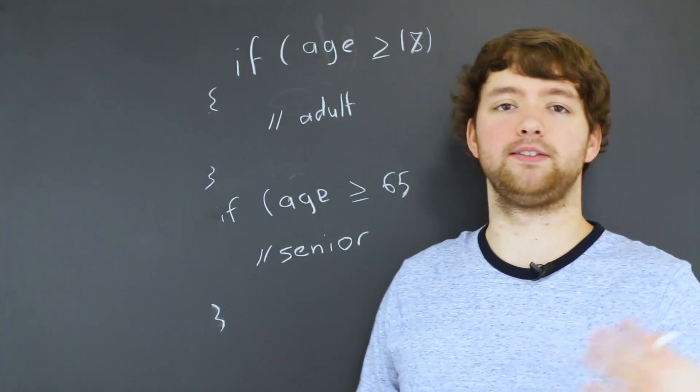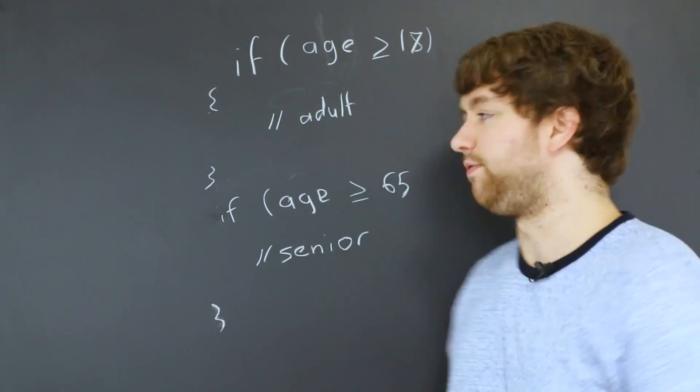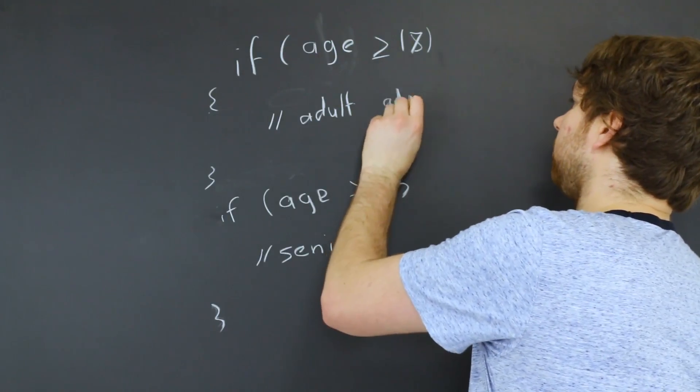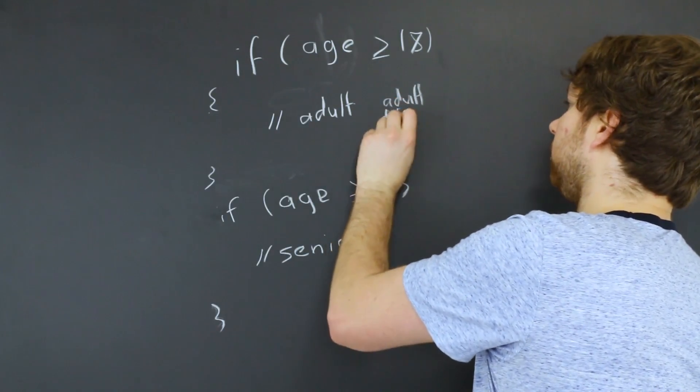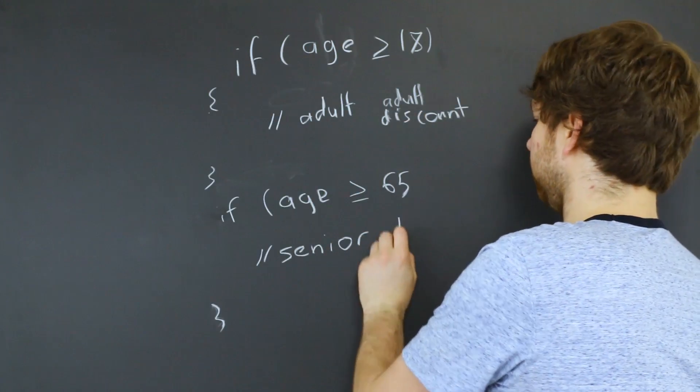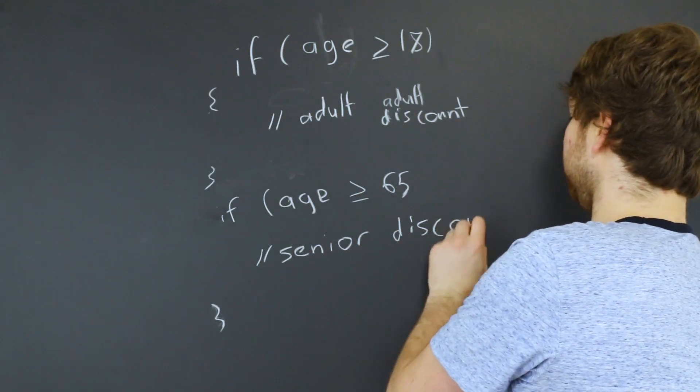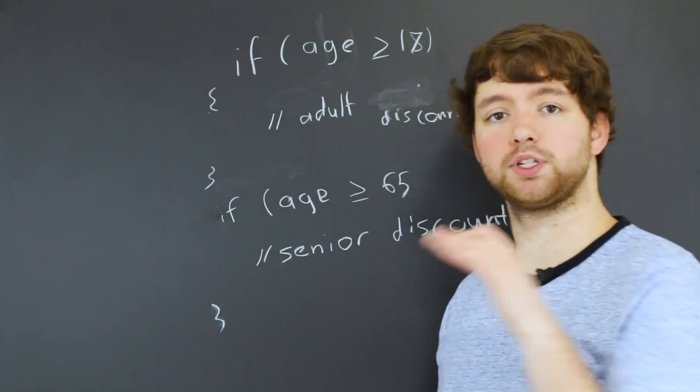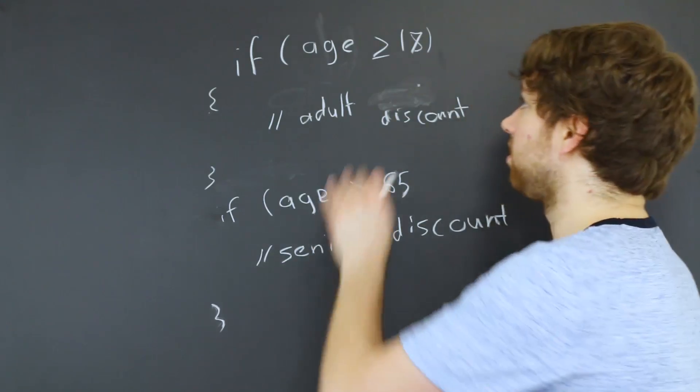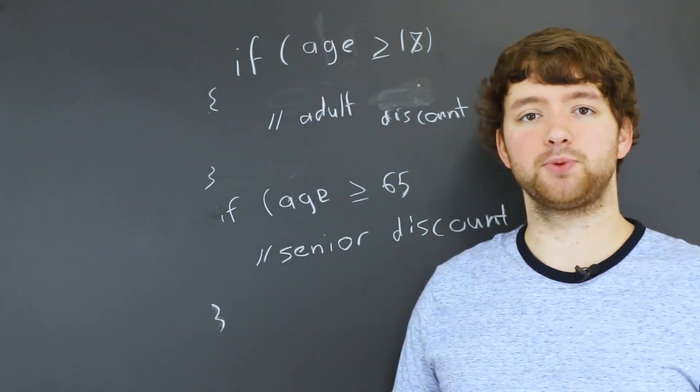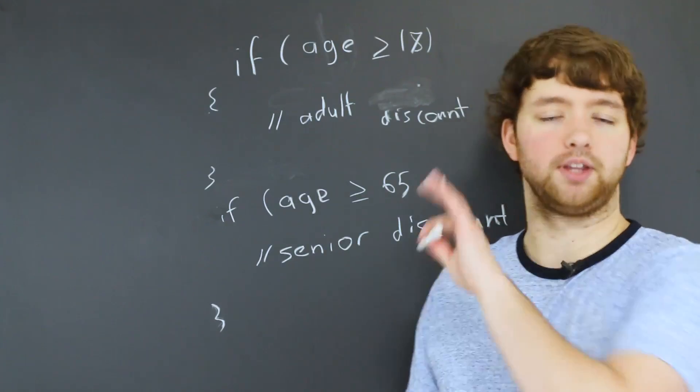And then if you're 18 or older you get maybe a discount, and then if you're 65 you get a senior discount. If you structured your code like this, this would be the adult discount and this would be the senior discount. With this structure, if you're a senior you're going to get both the adult discount and the senior discount.